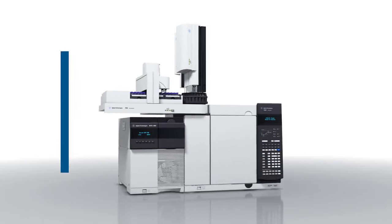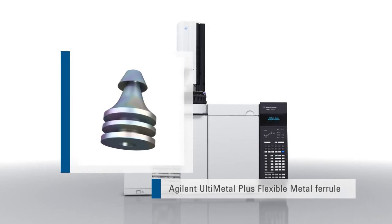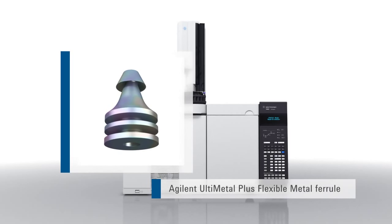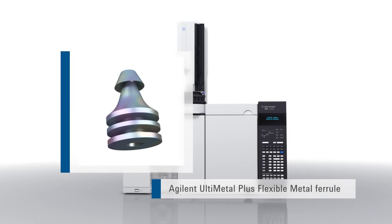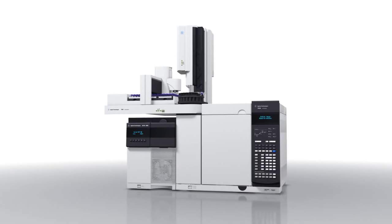An alternative to soft graphite polyamide ferrules are Ultimetal plus flexible metal ferrules. Designed for use with Agilent capillary flow technology devices, these are gaining popularity in other applications including the split splitless inlet.